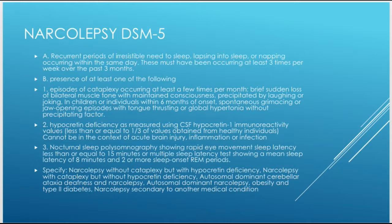You can specify narcolepsy without cataplexy but with hypocretin deficiency, narcolepsy with cataplexy but without hypocretin deficiency, autosomal dominant cerebellar ataxia deafness and narcolepsy, autosomal dominant narcolepsy, obesity and type 2 diabetes, or narcolepsy secondary to other medical conditions. Key things to remember: narcolepsy is an irresistible need to sleep or lapsing into sleep within the same day, at least three times per week for three months, with one of the following — cataplexy, hypocretin deficiency measured by CSF hypocretin-1 immunoreactivity values, or a sleep study finding.